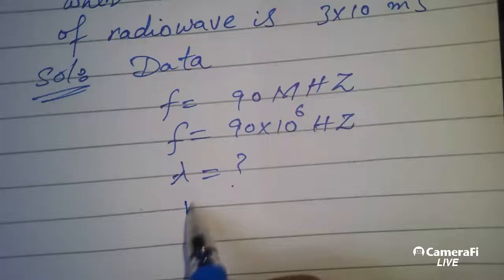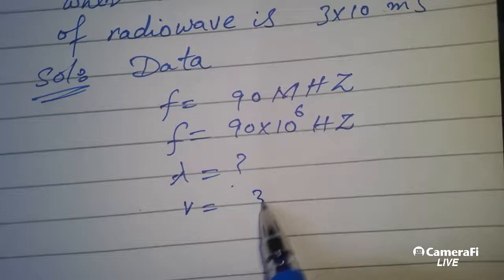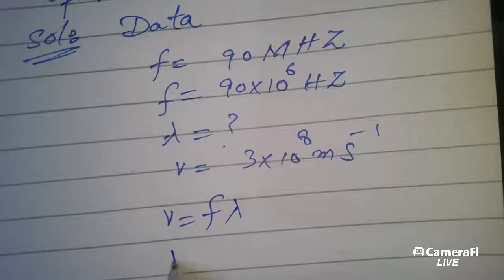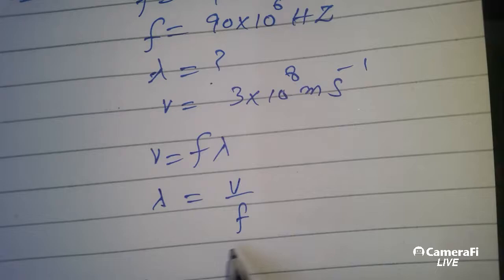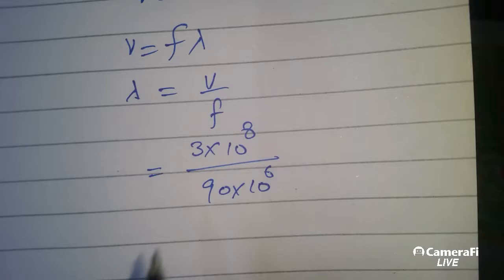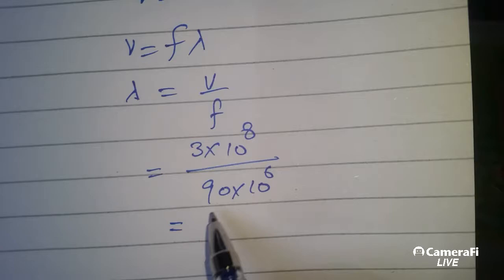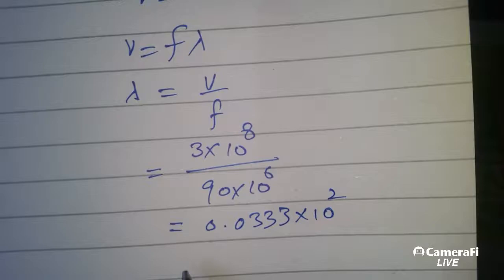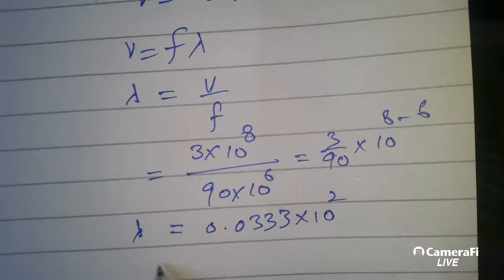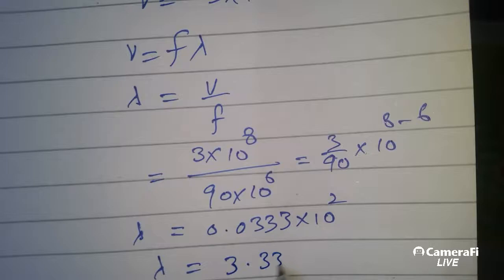V is equal to F lambda. Lambda is equal to V over F: 3 into 10 raised to power 8 over 90 multiplied by 10 raised to power 6. The answer is 0.0333 multiplied by 10 raised to power 2, and the final answer becomes 3.33 meter.